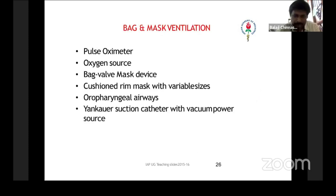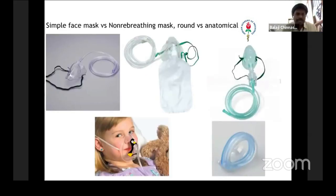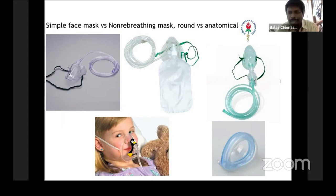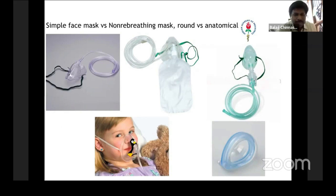Coming to the oxygen sources: you have a simple face mask, which delivers 40 to 60% oxygen. If you need a higher amount, there is a bag attached to the mask — that is the non-rebreathing mask, which can deliver up to 90% oxygen because it has a reservoir. If there is a chamber below instead, that is the nebulization chamber, used for nebulization. Remember: nebulization chamber for nebulization, reservoir for non-rebreathing mask, and simple mask gives 40 to 60%. The size of the mask should be correct for children — it should cover the nose, mouth, and chin, but not the eyes. You have cushioned and uncushioned types — cushioned causes less injury.